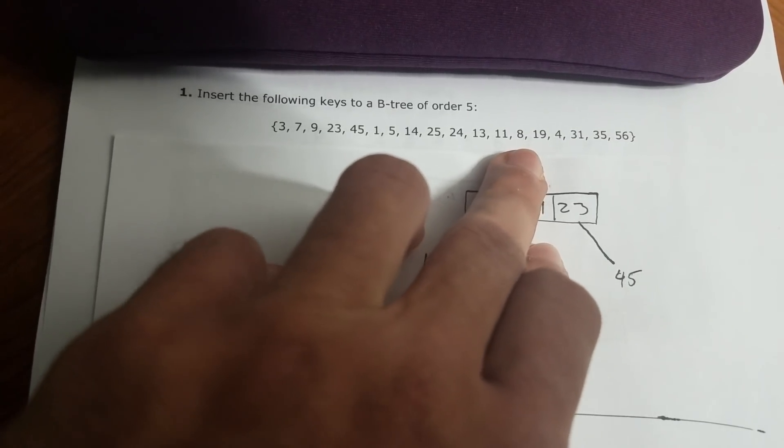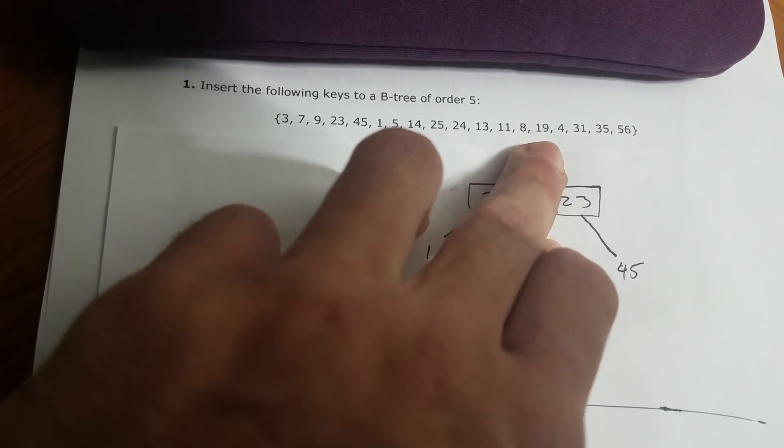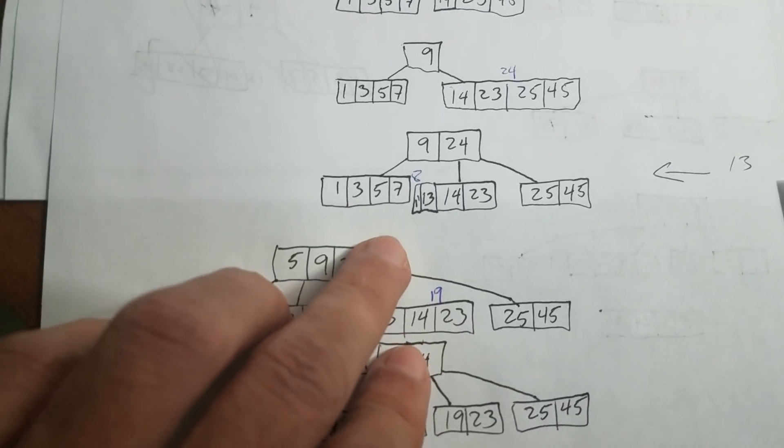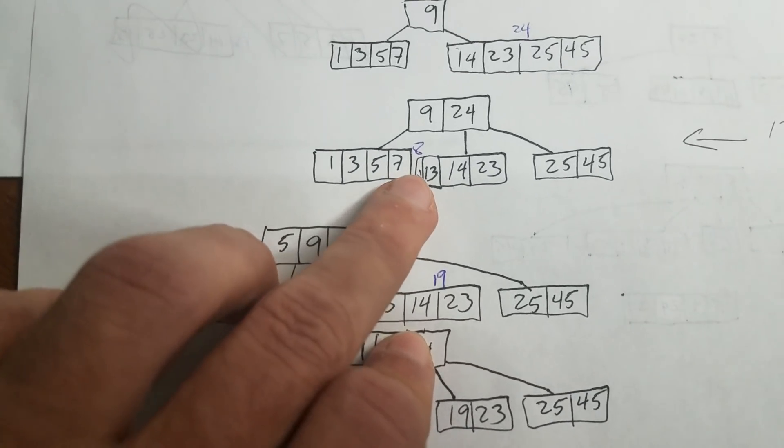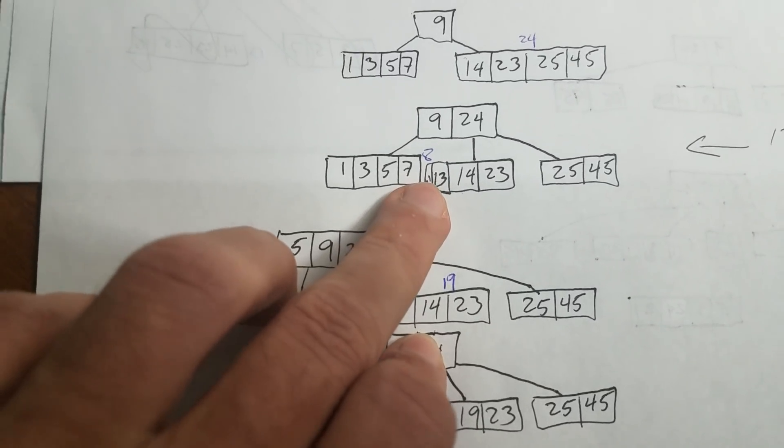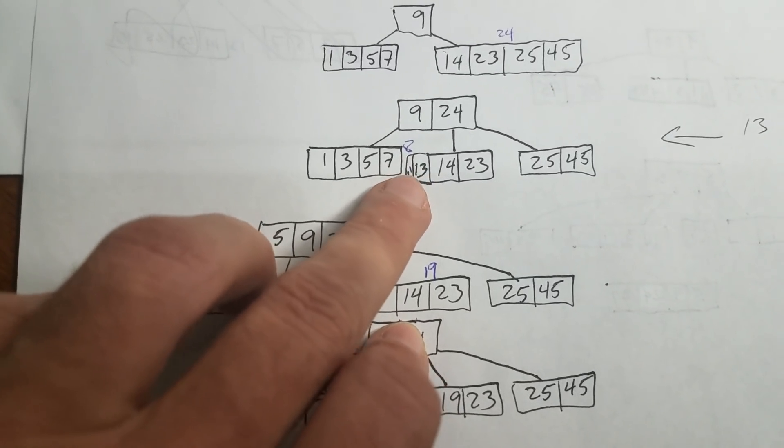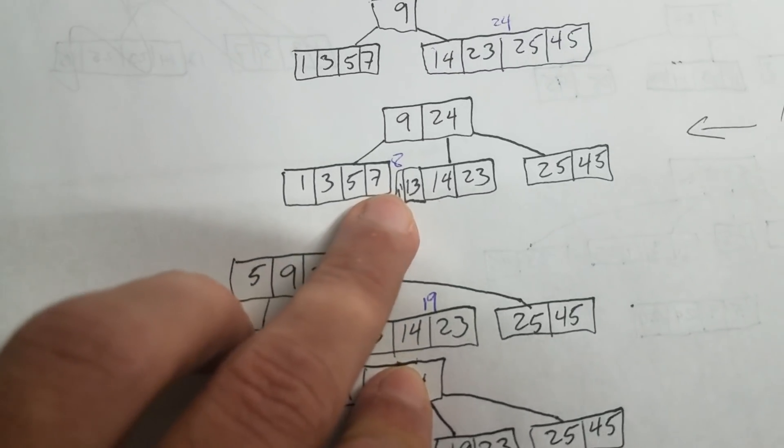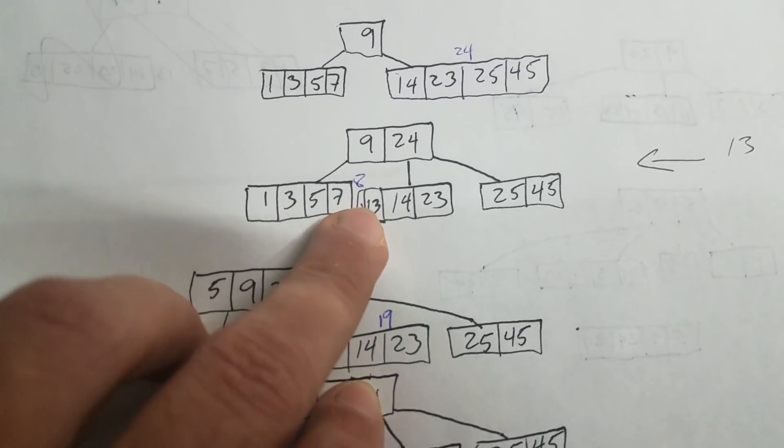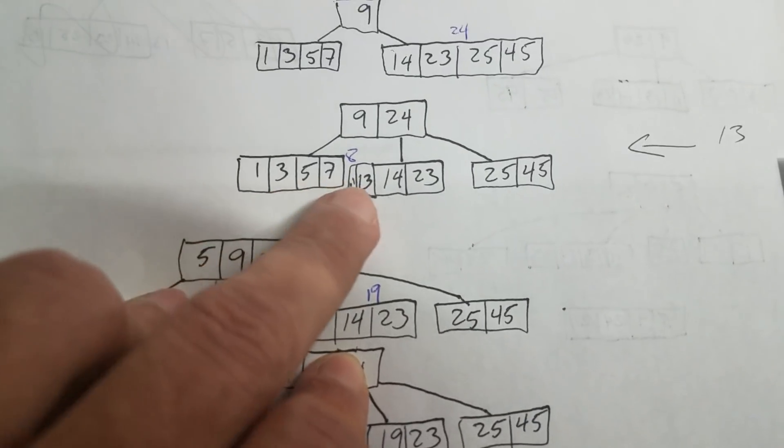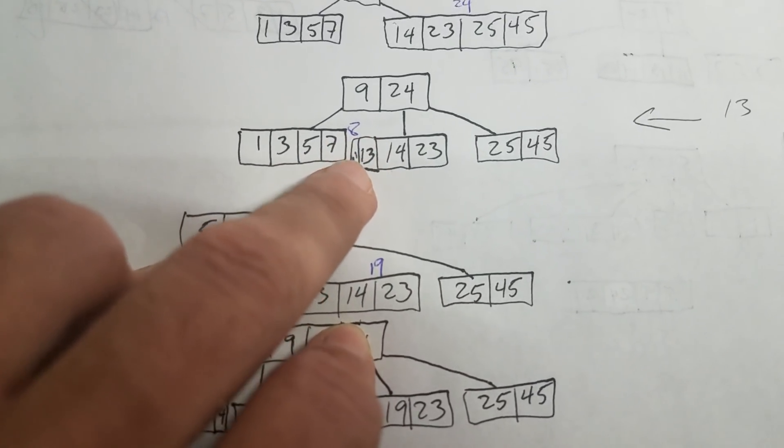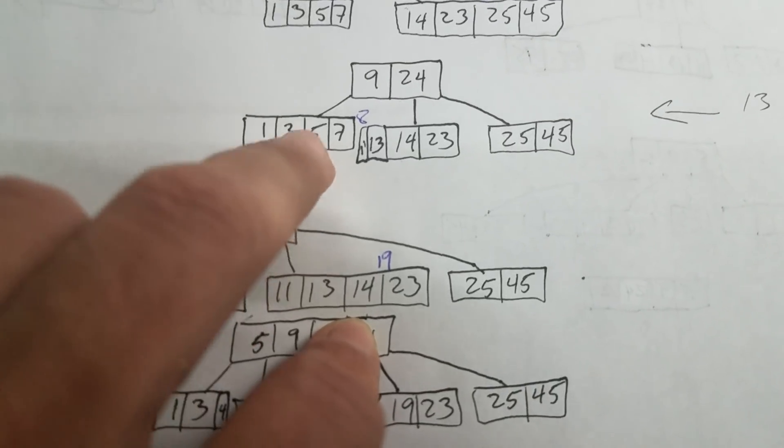The next one is going to be 8 and 19. So if we see here, 8 is pretty easy to allocate. We just need to add it to the right. Actually, let me see, we have 1, 3, 5, 7. Alright, so we have 4. What do we have to do? We have to split this. Now, 8 is going to be to the right side. So 5 is the middle one.